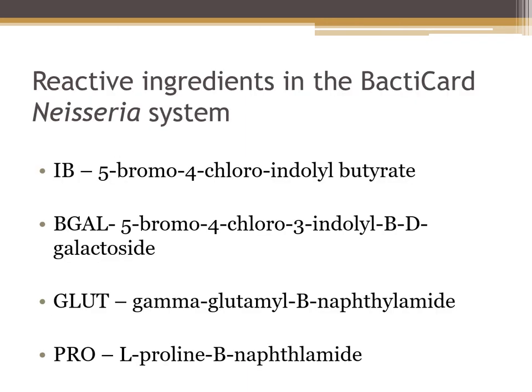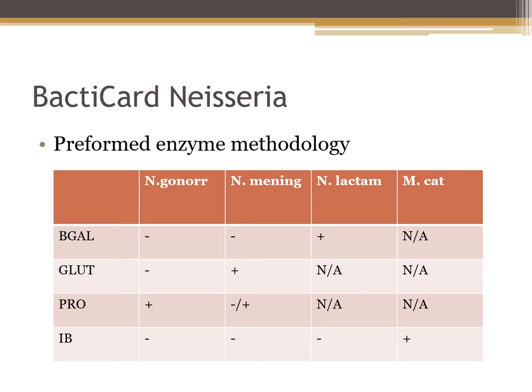Here's a list of the reactive ingredients in the Bactacard Neisseria system — you need to be able to recognize these. For example, the well positive for Moraxella catarrhalis is the IB well, which contains 5-bromo-4-chloroindolbutyrate. In summary: Neisseria gonorrhoeae — Pro is positive; Neisseria meningitidis — Glut is positive, Pro is variable; Neisseria lactamica — B-gal is positive; and Moraxella catarrhalis — IB is positive. Those are the key enzymatic reactions for differentiating these species.